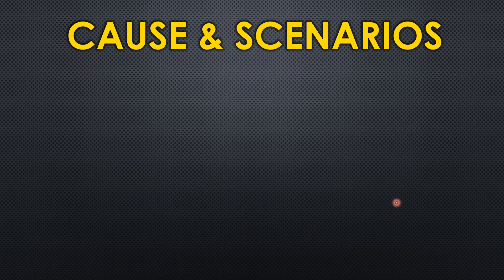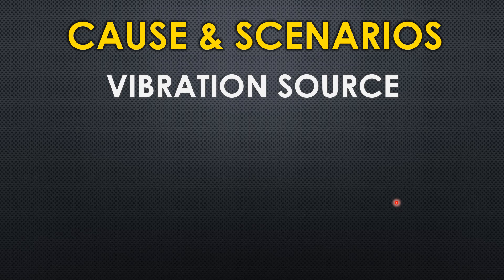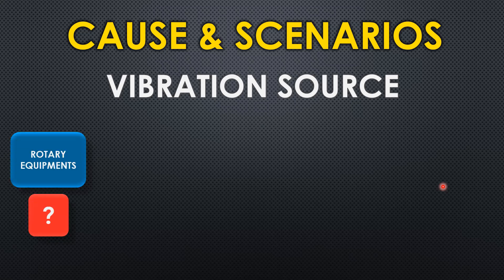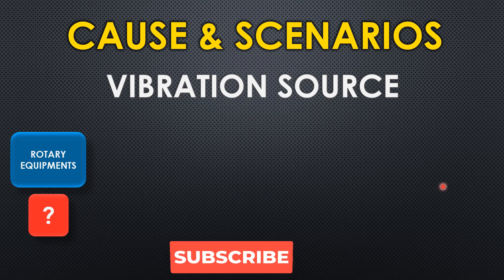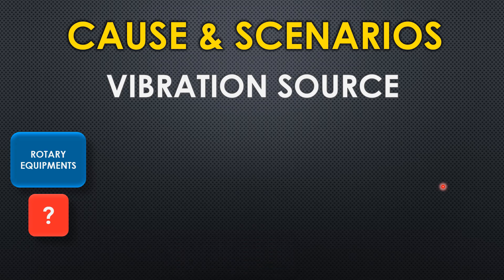Now let's go to the causes and scenarios. First, we need to identify the vibration source. The first source is rotary equipment — pumps, compressors, and turbines. Rotary equipment generally generates vibration because of the rotor within the equipment, and this vibration slowly gets transferred to the piping system. If the piping is not supported to handle this vibration, there will definitely be failure and damage in the piping.